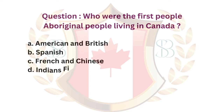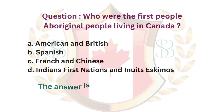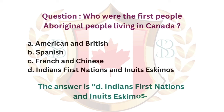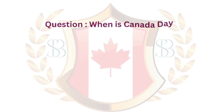Question. Who were the first Aboriginal people living in Canada? a. American and British. b. Spanish. c. French and Chinese. d. Indians, First Nations, and Inuits (Eskimos). The answer is d. Indians, First Nations, and Inuits (Eskimos).